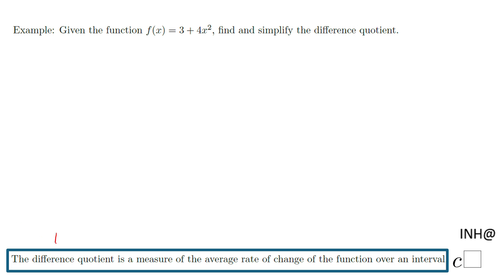The difference quotient is a measure of the average rate of change of a function over an interval. The average rate of change is f(b) minus f(a) over b minus a - the slope formula for an interval a to b.